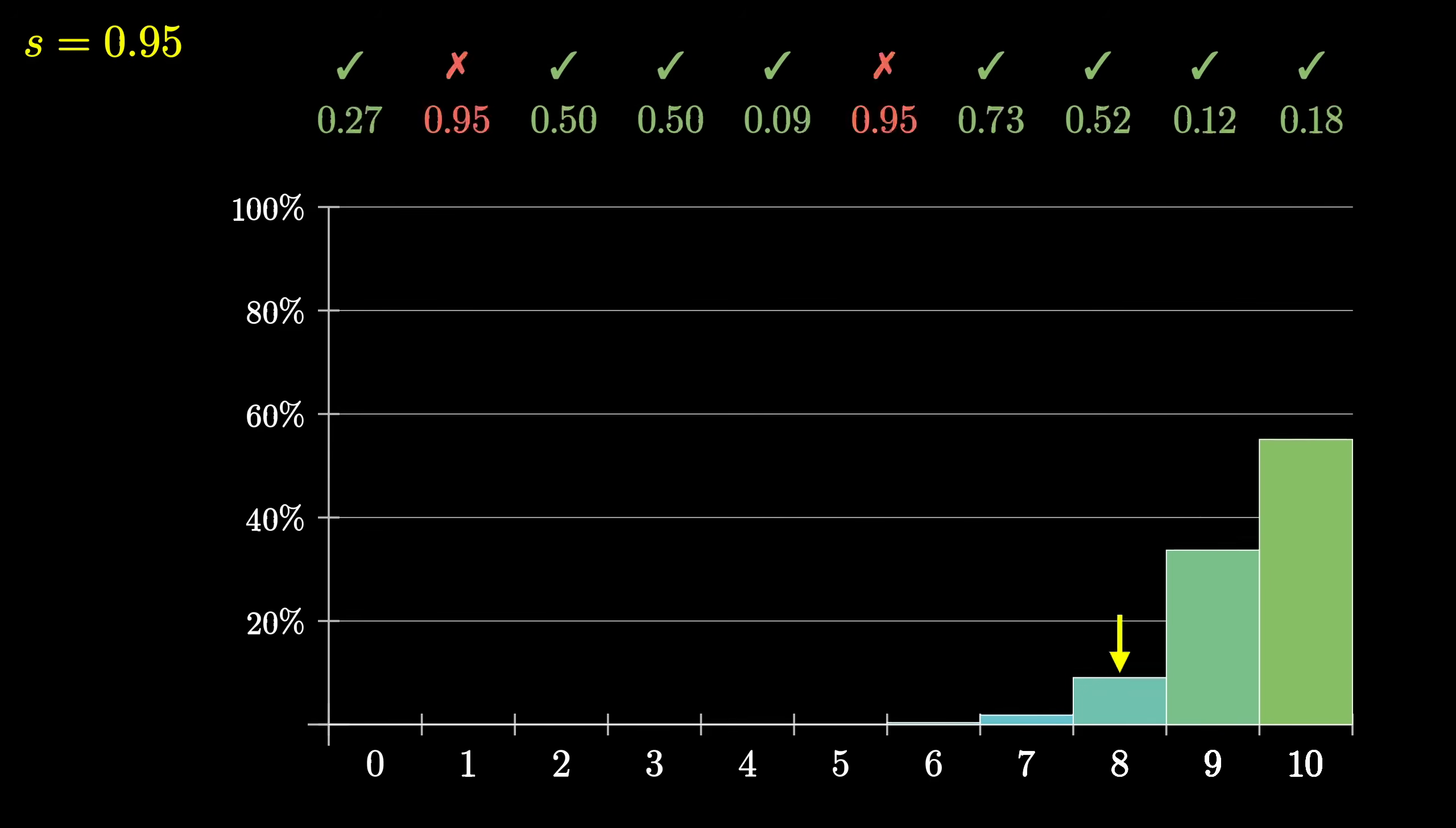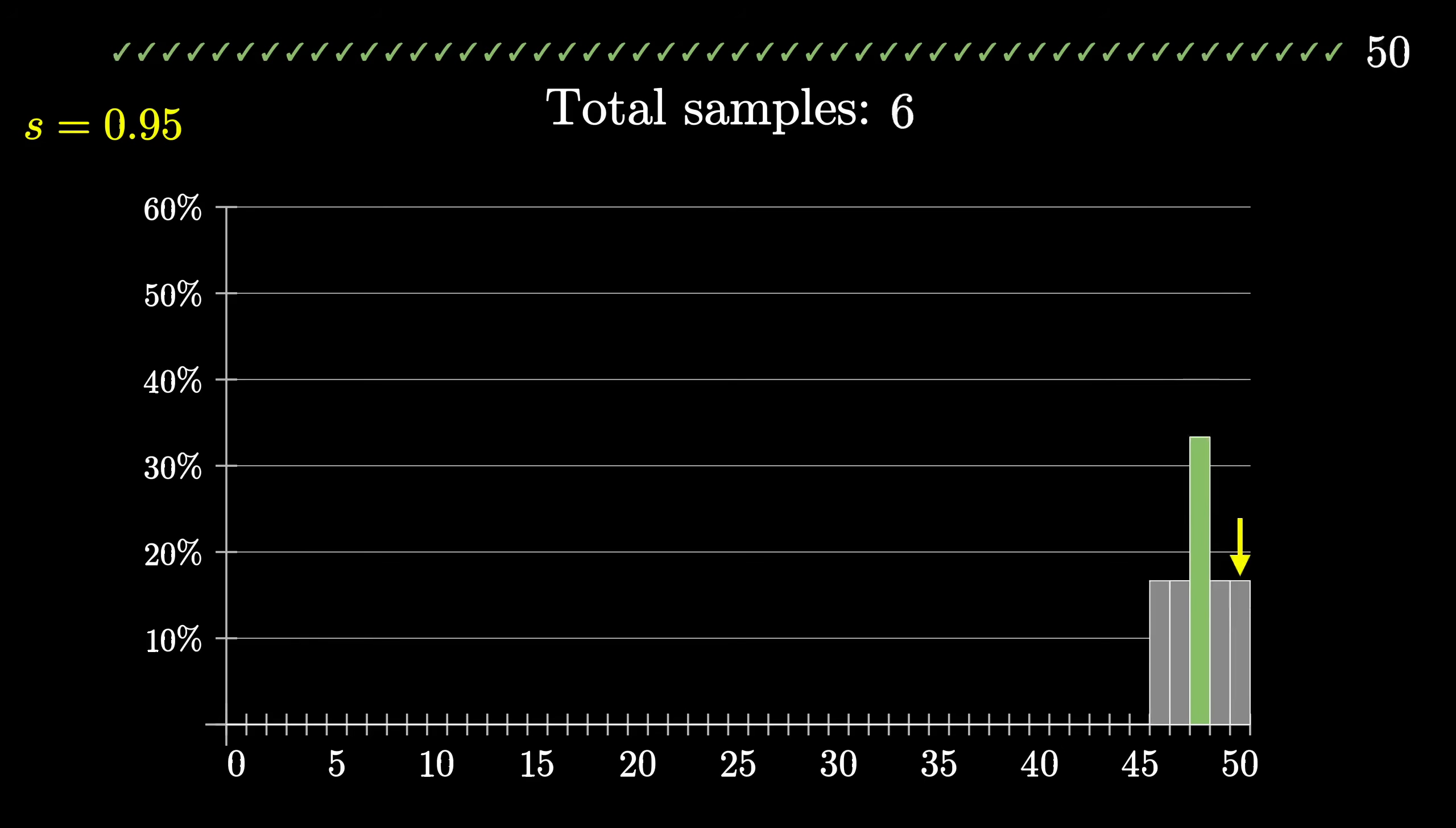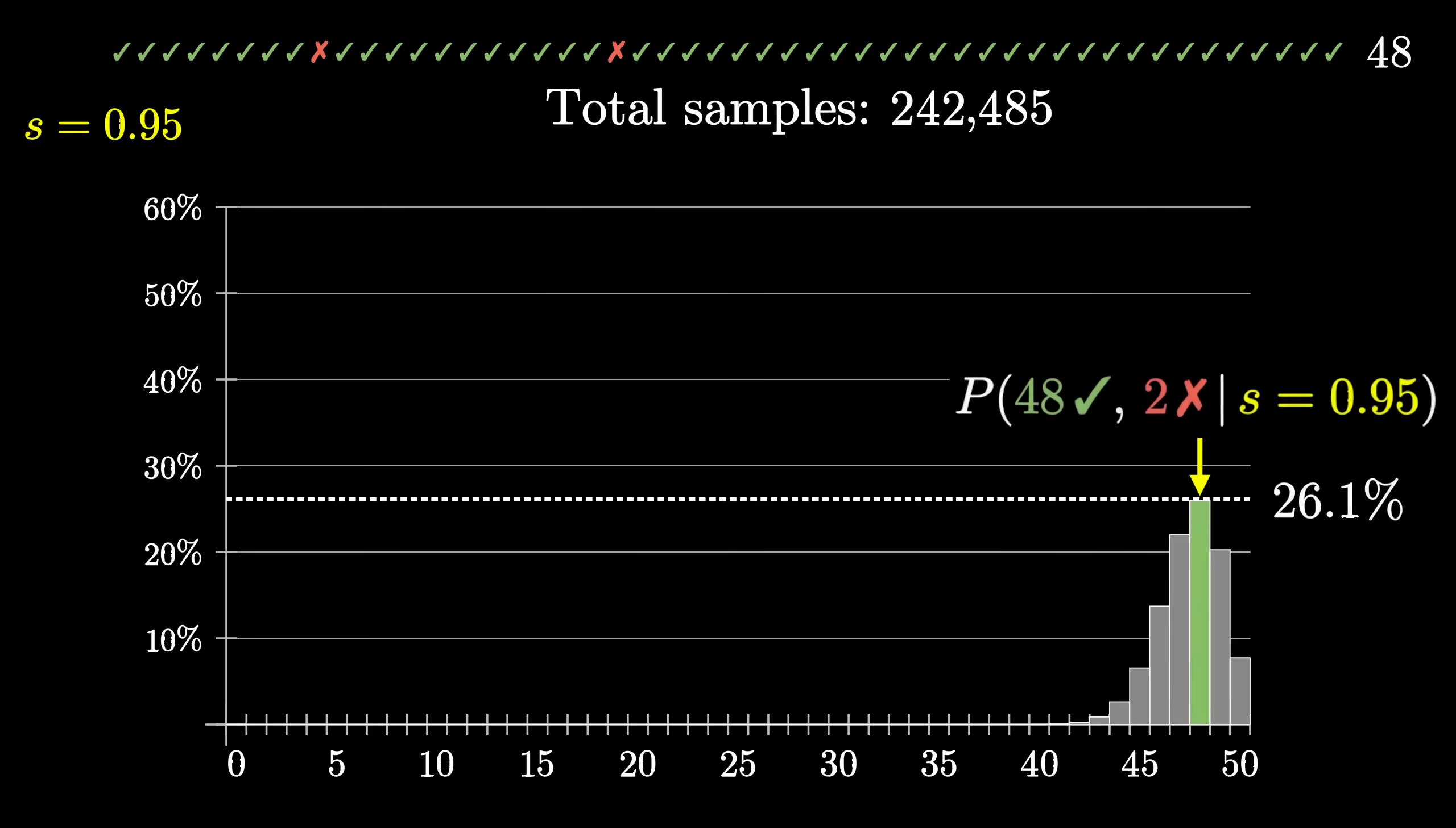Likewise you could simulate sets of 50 reviews and get some sense for how probable it would be to see 48 positive and 2 negative. You see, this is the nice thing about probability, a little programming can almost always let you cheat a little and see what the answer is ahead of time by simulating it. For example, after a few hundred thousand samples of 50 reviews, assuming the success rate is 95%, it looks like about 26.1% of them would give us this 48 out of 50 review.